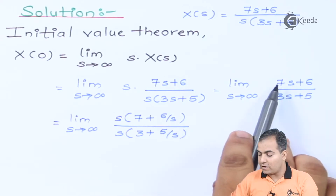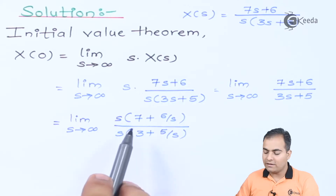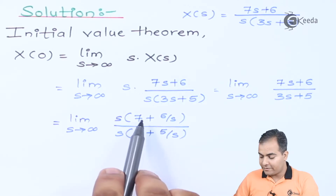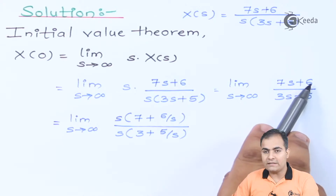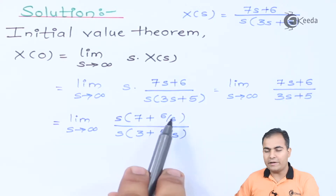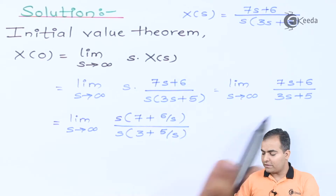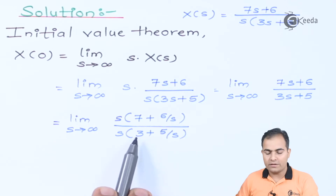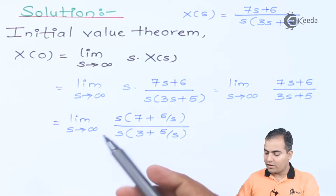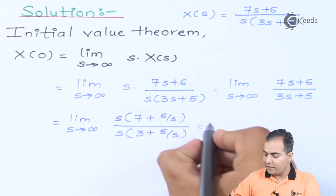Taking s common from numerator and denominator, the s terms cancel. From 7s you take s common; in 6 there is no s so 6 is divided by s. Similarly, 5 is divided by s, and 3s gives only 3 remaining. After the two s terms cancel, we move to the next step.